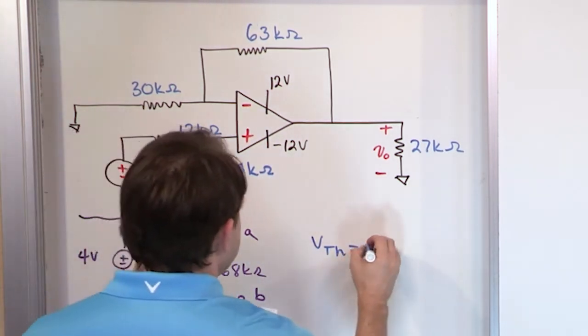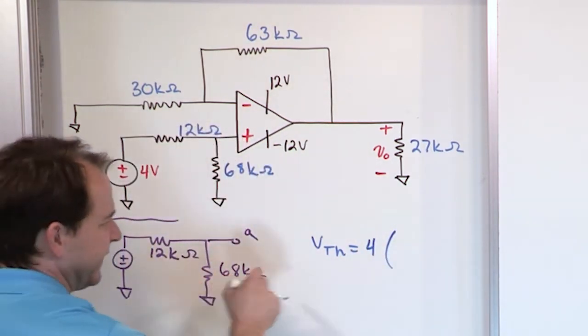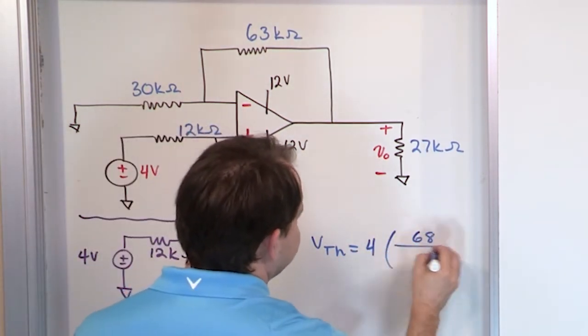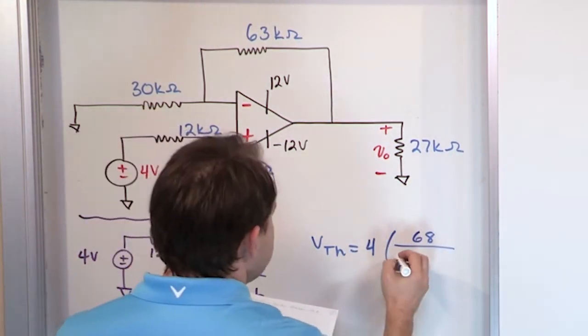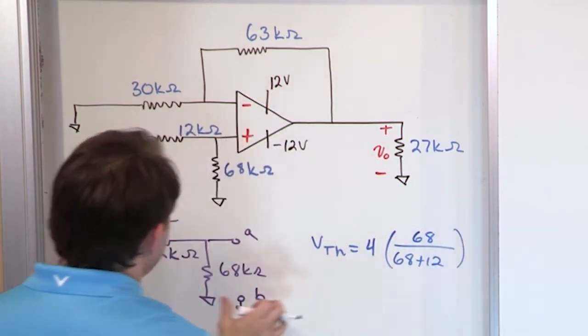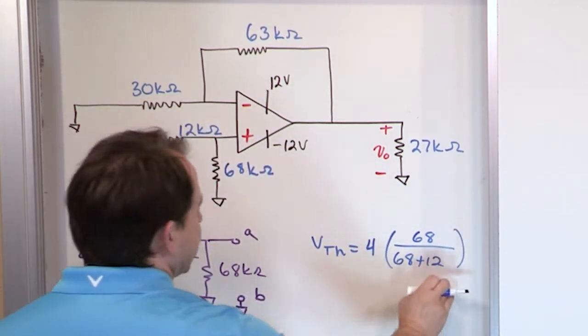So the Thevenin equivalent voltage is just a voltage divider. It's 4 times this resistor divided by the sum of these resistors. So it's going to be 4 times the 68 from here. And you could do 68,000 and then divide by thousands. The thousands are going to go away. And it'll be 68 plus the 12, which is the sum of these resistors. So it's a simple voltage divider.